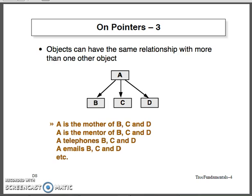Now here we are trying to relate three different data elements using pointers. You can see four different elements A, B, C, and D. Here A is the element which is pointing to the address of B, C, and D. That means A is serving as the mother of the remaining elements B, C, and D, having a relationship with all three elements which are lying at the same level. So objects are having the same relationship with more than one other object.